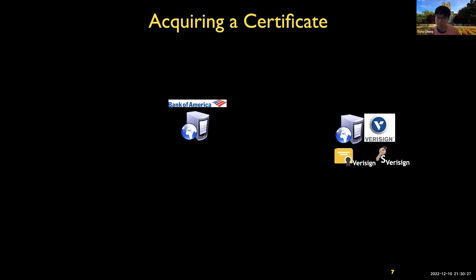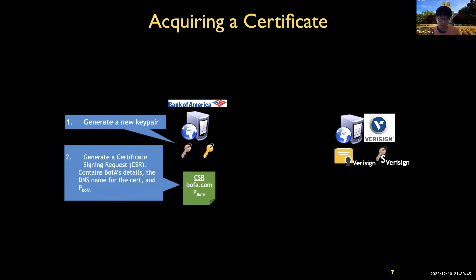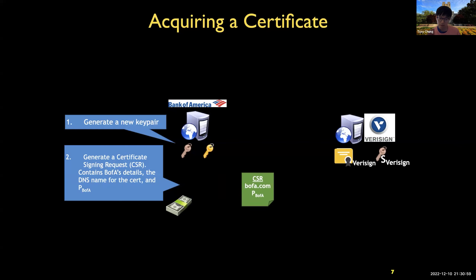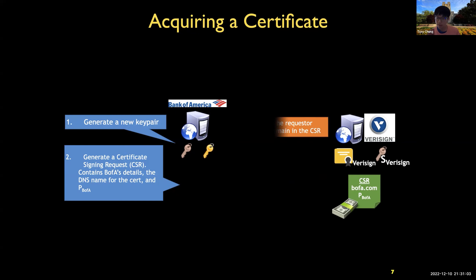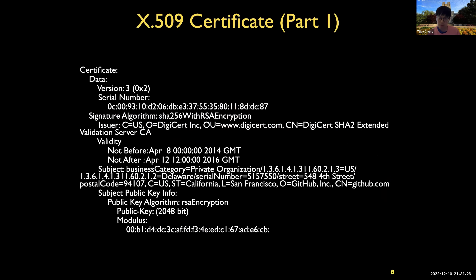To get a certificate, for example Bank of America, they must first generate a key pair — private and public key. After that, they generate a Certificate Signing Request, called CSR, which is the form sent to the CA to ask for issuing a certificate. Of course, they have to pay the fee, and VeriSign will manually or automatically verify the requester to make sure they own bankofamerica.com. After validation, VeriSign generates a certificate and signs it so that Bank of America can use it to serve their customers.